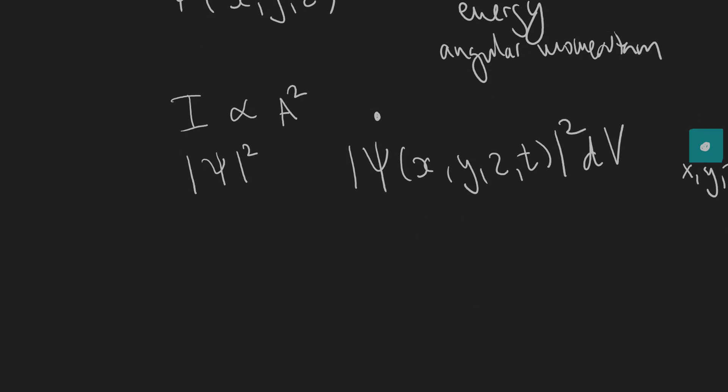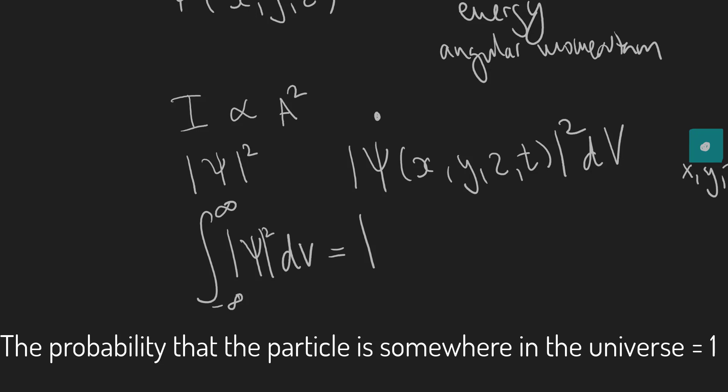It means that if I take the square of the amplitude and integrate it over the whole of space, so let's say I integrate |psi|^2 dV from minus infinity to infinity, then this will always have to equal one. And this is our normalization condition. In other words the probability is exactly one that the particle is somewhere in the universe.